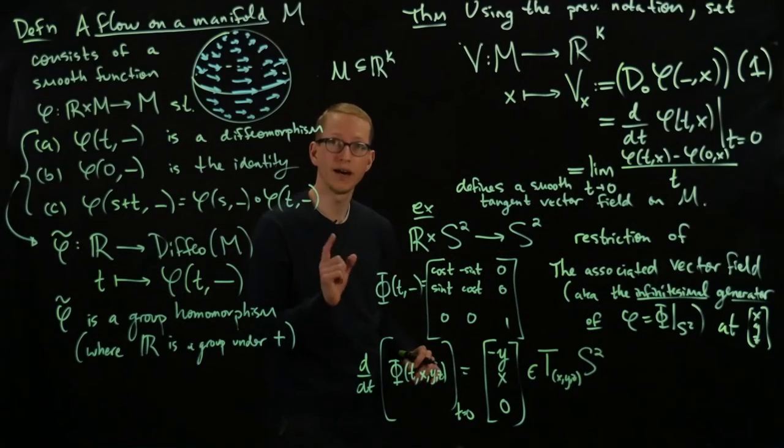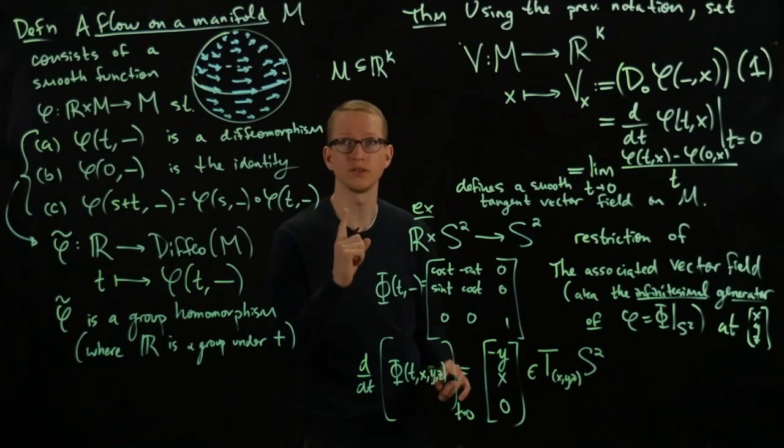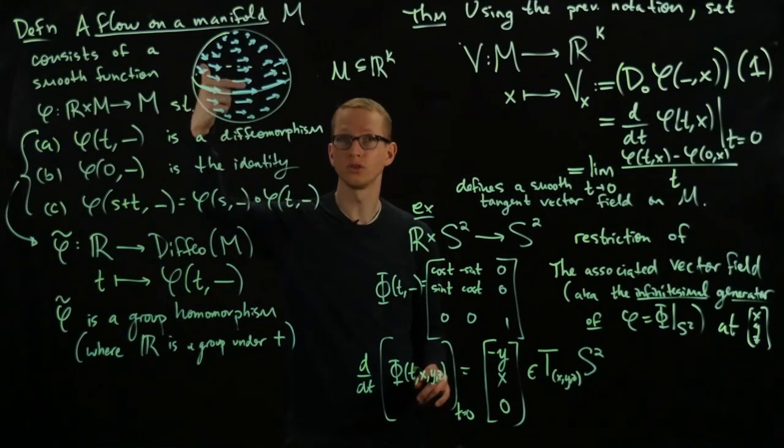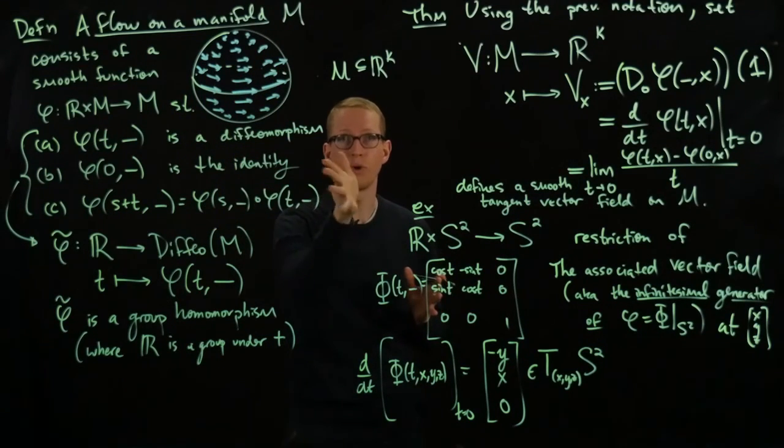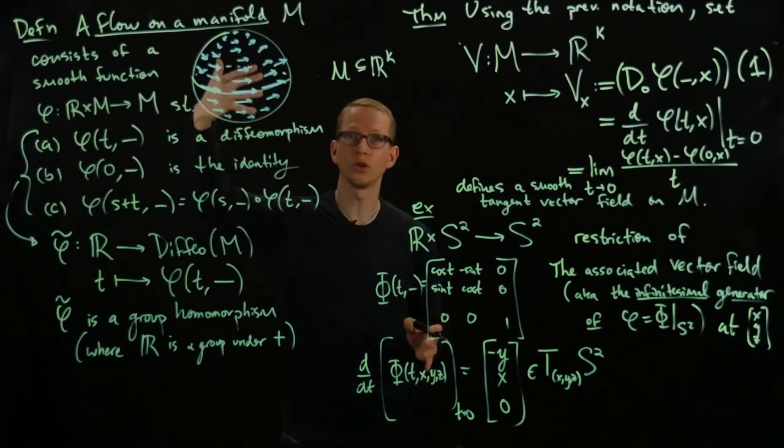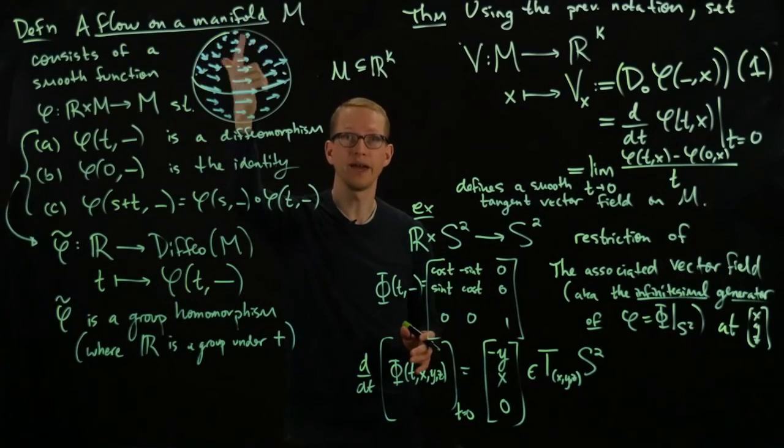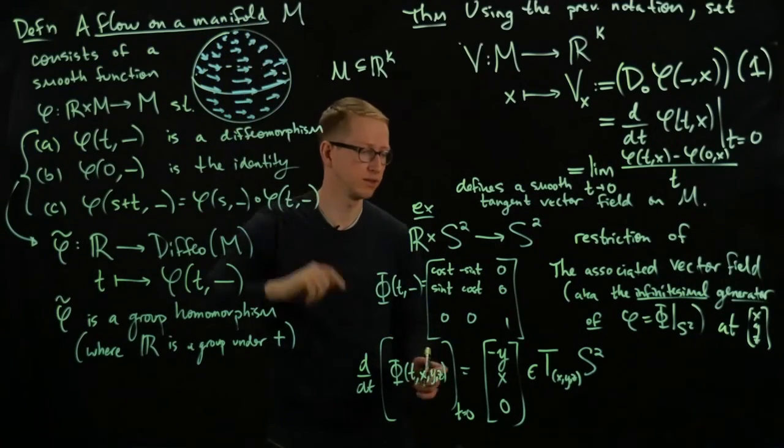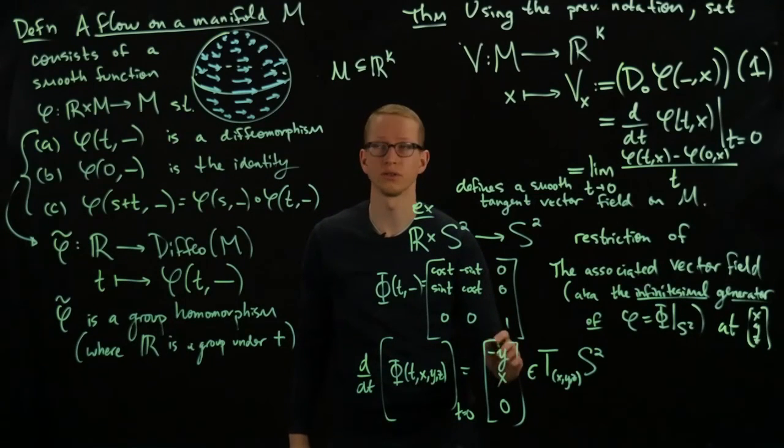And it defines a vector field on all of S², and it looks something like this. You're sort of, you have a vector field that points around the sphere, and as you go closer to the north pole, the magnitude of that vector field decreases. That's because x and y are getting smaller and smaller.